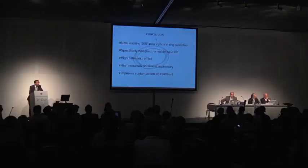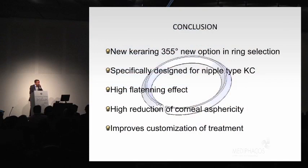In conclusion, this new 355 ring is a new option in ring selection. It's more specifically designed for nipple-tip keratoconus. There's a very high flattening effect, high reduction of corneal sphericity, and this once again improves the customization of the treatment. Thank you very much, and thank you, Marcelo.